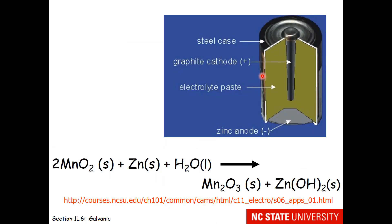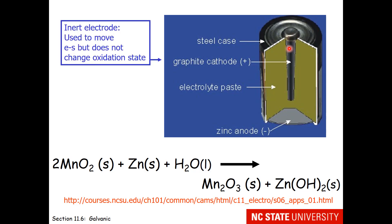If you were to open up your typical C or D battery, this is what you would see. You would see this electrolytic paste — this is the manganese compound that we're reacting with and making. You would see that your anode of zinc metal is here on the bottom. The electrons flow out the anode, through whatever we hook it up to, and come back in through the cathode. Since you can't use a paste as a cathode, we have graphite — an inert electrode used to move the electrons but which does not change oxidation state.